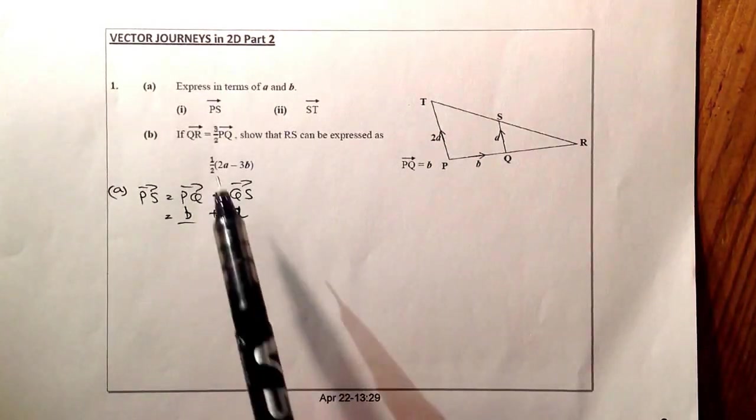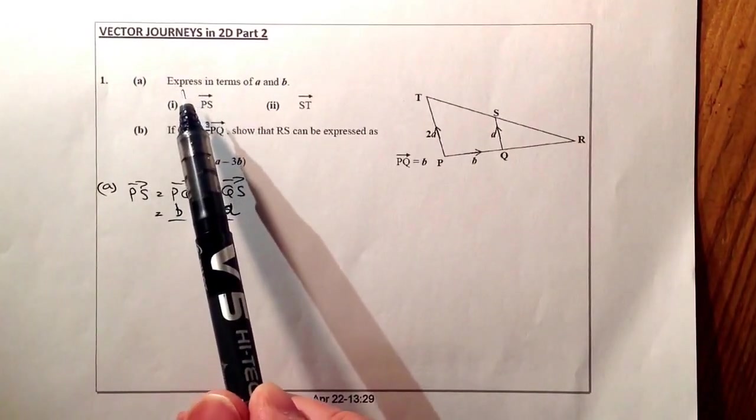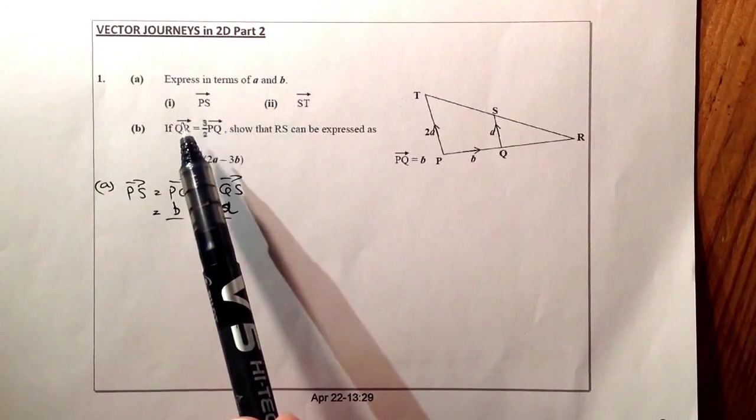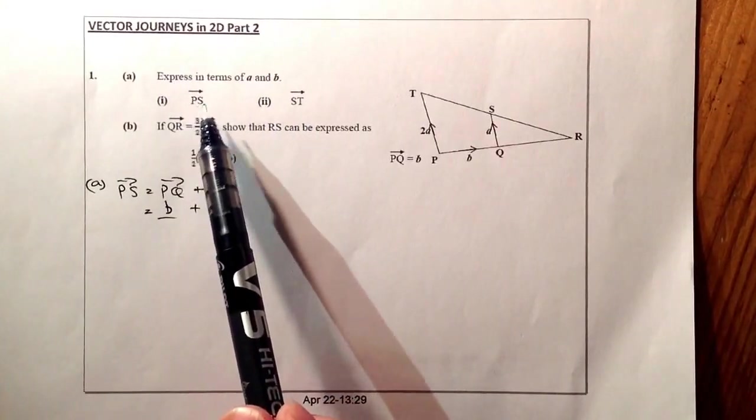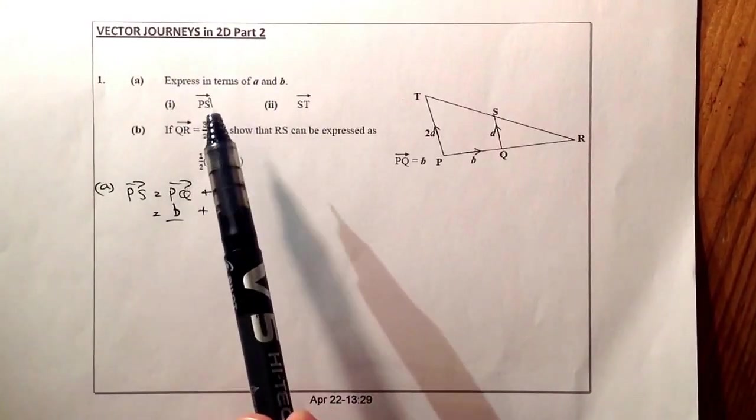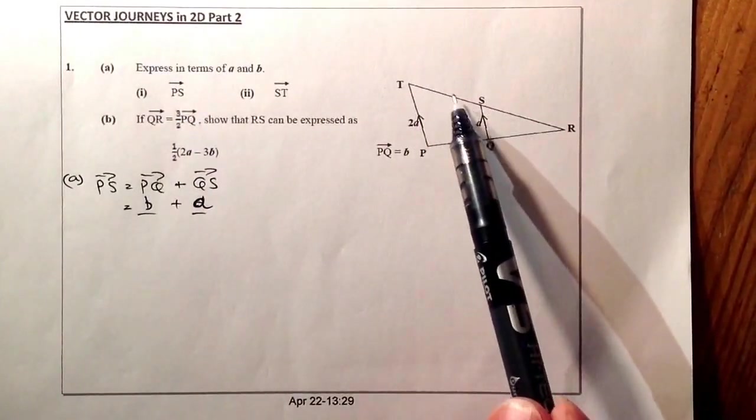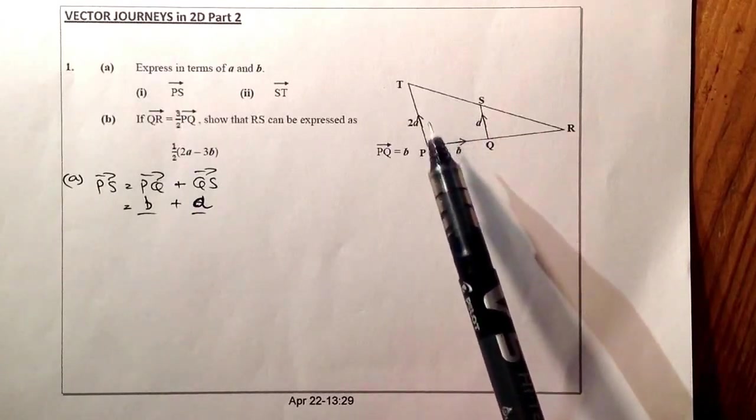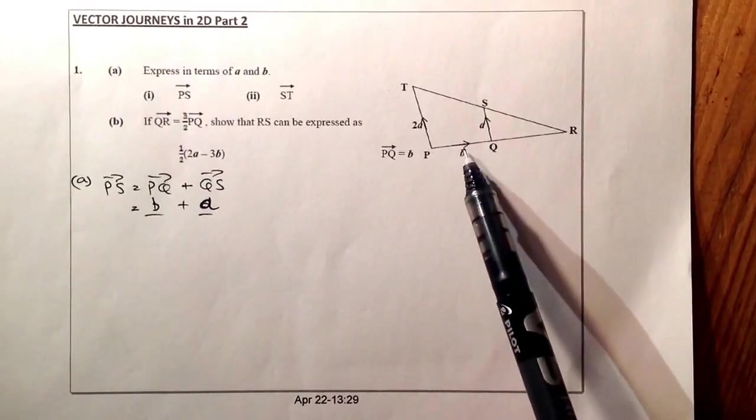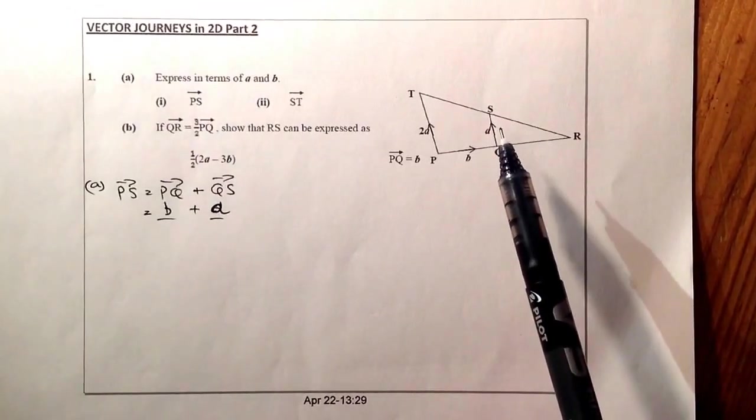Right, so the first part I've done already, so what we have here is we've to express in terms of A and B, the vectors PS and the vectors ST. Now if I look at PS, to get from P to S, there's a couple of routes that I can take. I don't know anything about this route here, but I do know P to Q, I know the vector there, and Q to S, I know the vector there.